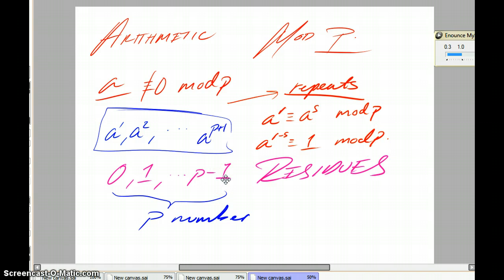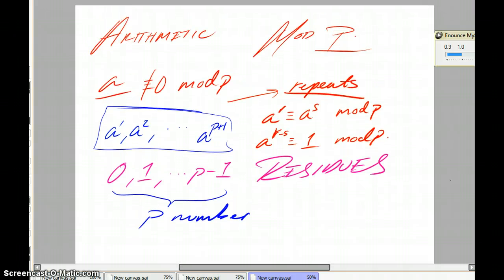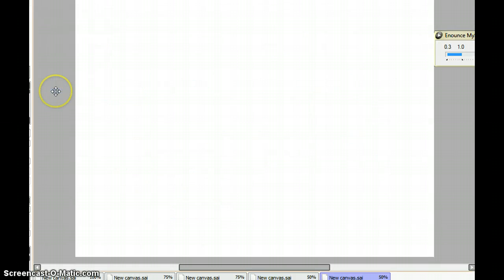Since a is not congruent to 0 mod p, the greatest common divisor of a to the s and p is 1. So we can divide the congruence and still keep the same mod. And that's the beauty of using a prime number. In number theory, prime numbers are basically the fundamental building block of all other numbers, which is what makes this particular proof interesting. And it begs the question, how can we generalize this to other numbers that are not prime? So we have this fact that a to the r minus s is congruent to 1 mod p.